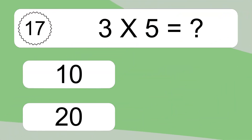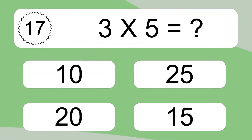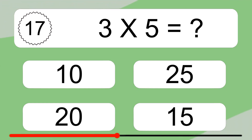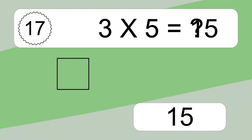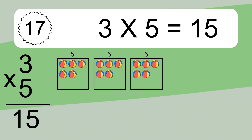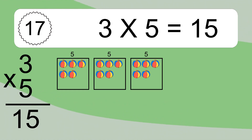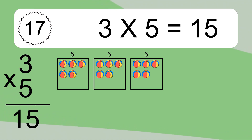3 times 5 equals what? 3 times 5 equals 15. We have 3 boxes, and each box has 5 colorful balls inside. If you count all the balls in all the boxes together, you will have 3 times 5 balls. This equals 15 balls.